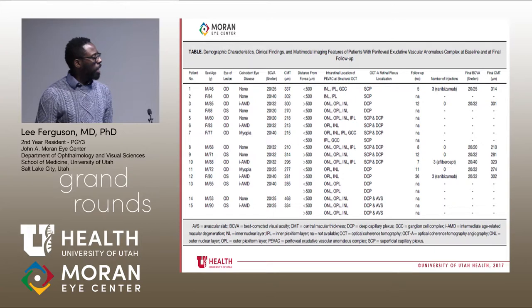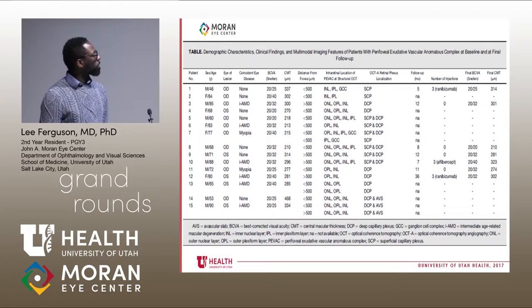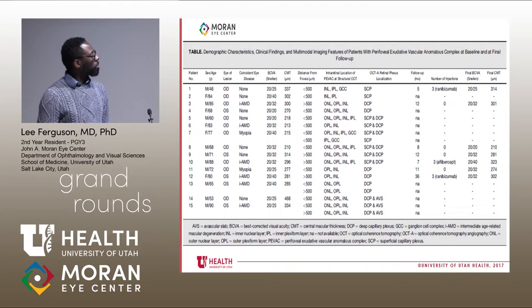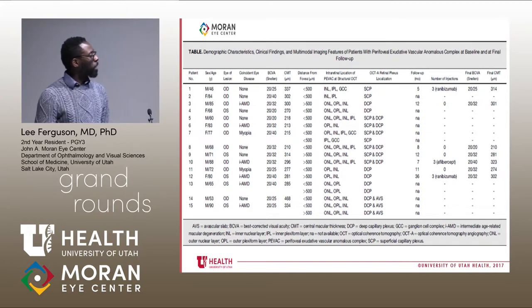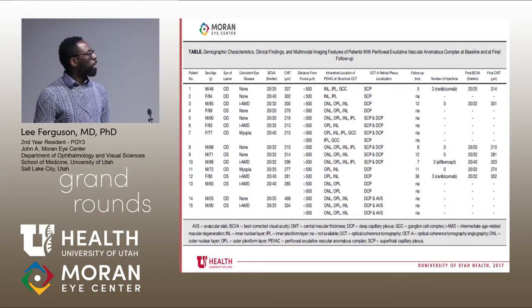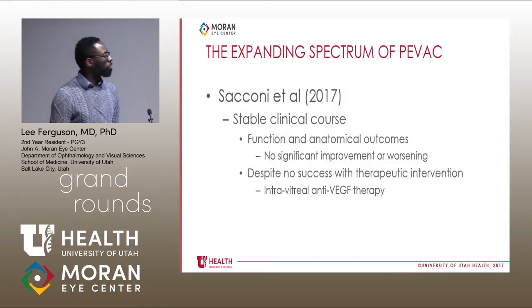This is a very busy slide, but what I wanted to highlight is that the mean age was around 73, it was a unilateral process, and some individuals had other conditions associated with it like AMD and myopia. In terms of best corrected visual acuity, the worst noted was about 20/40, so not much visual acuity deterioration.